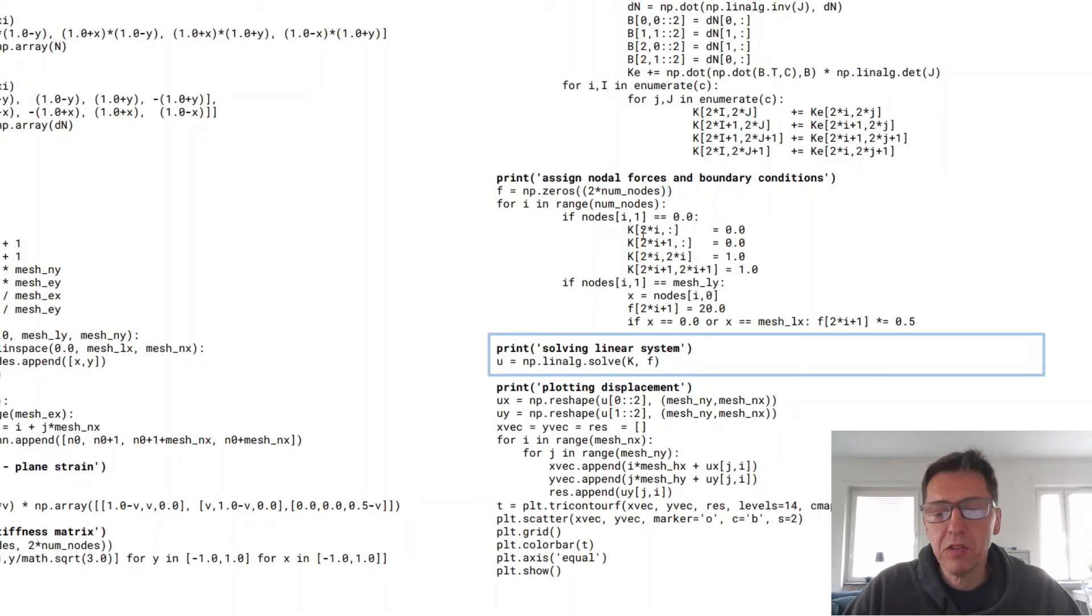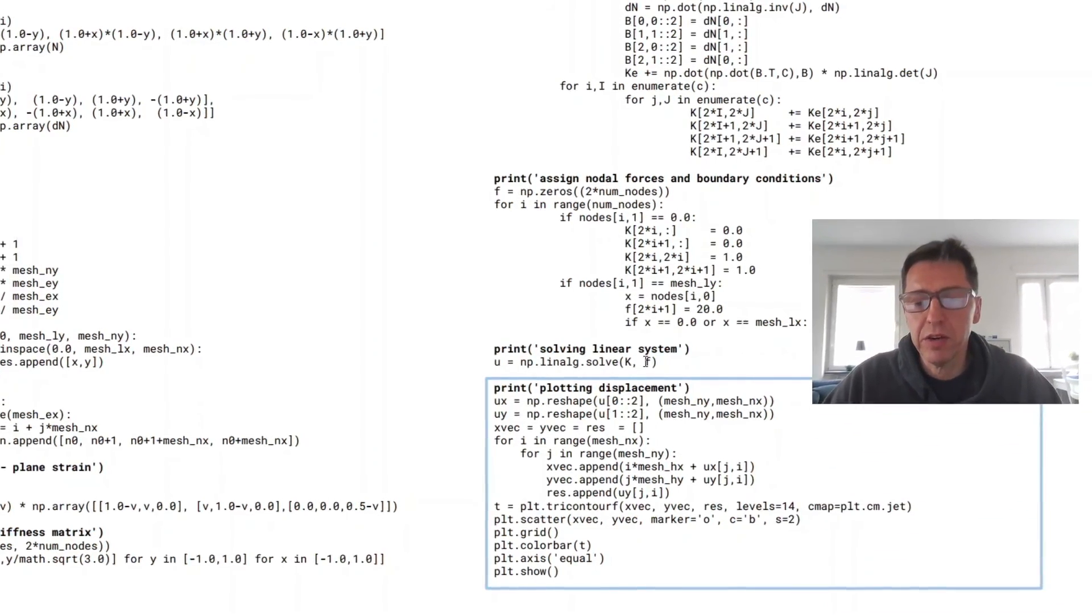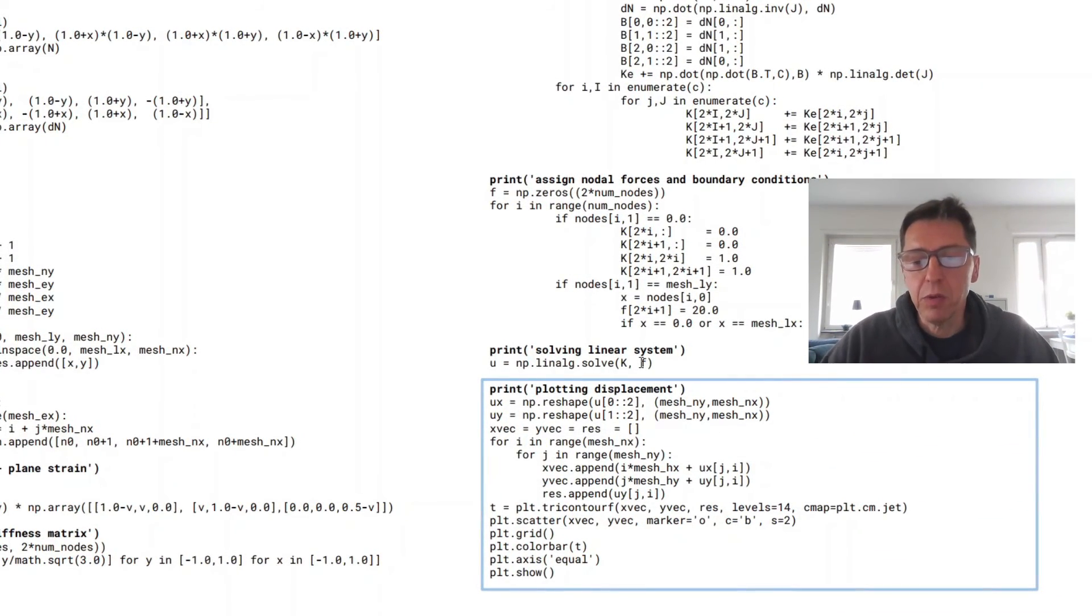Now we have one master solve command. Basically solve for the displacements for the given conditions that we've specified. And then the last portion here is just plotting the data. Here's one way to plot it. And it's pretty easy. So it fits in one page. It's pretty astonishing how much you can do with one page of Python code. So if we actually go ahead and try to run this,